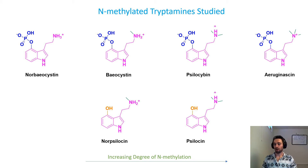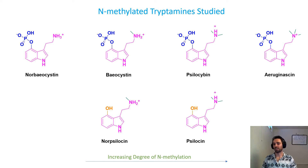The publication only looked at baocystin and norsilocin in the bioassays, because many scientists believe that aerogenesinin gets far too much broken down pharmacokinetically in your body before it can reach the blood-brain barrier. So they only studied those two compounds and used psilocin as a control.